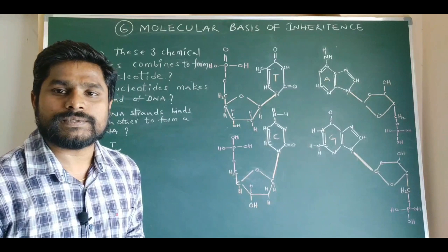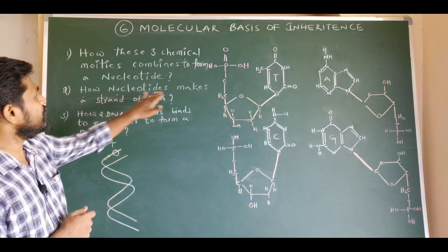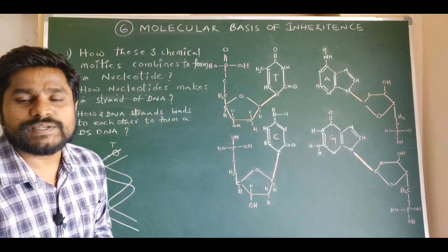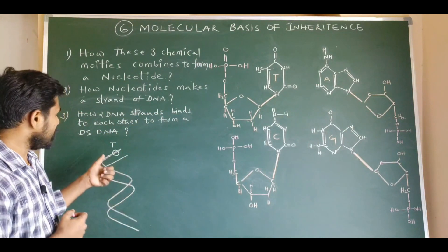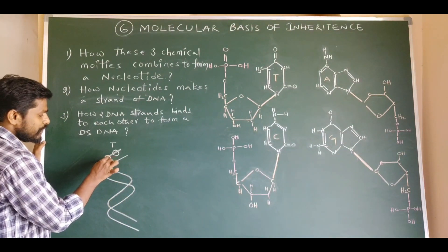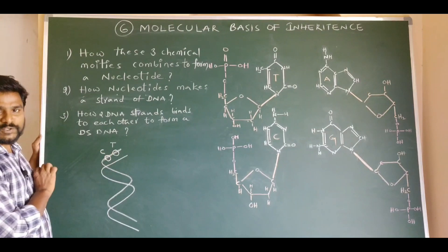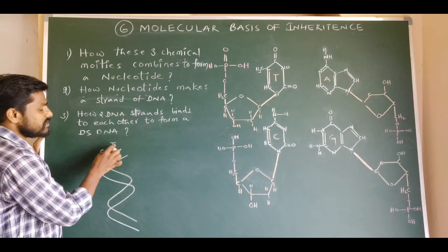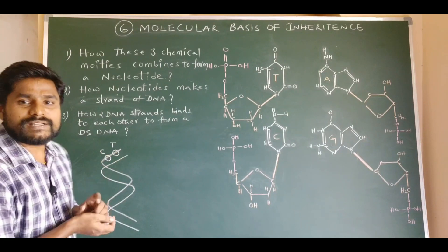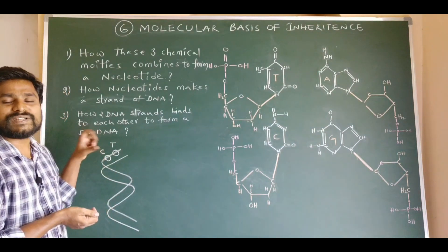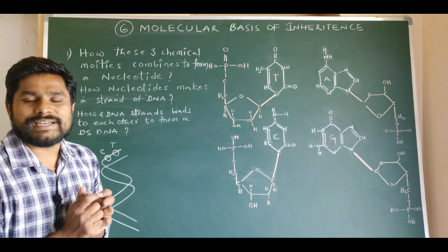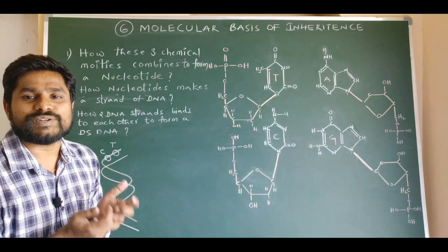Now let me explain the answer for the second question: how do nucleotides make a strand of DNA or a polynucleotide chain? In this double-stranded DNA molecule, I am considering a nucleotide having cytosine as the nitrogen base, which is adjacent to a thymine nucleotide. I want to make you understand how these adjacent nucleotides join with each other in making a DNA strand.